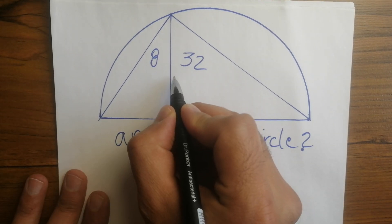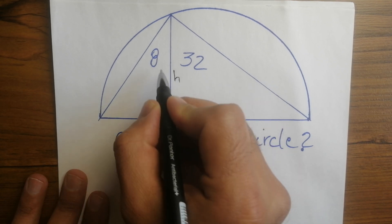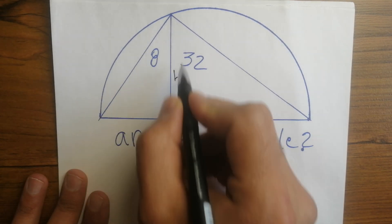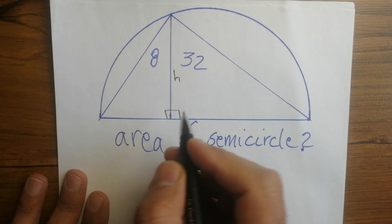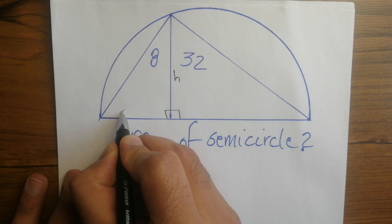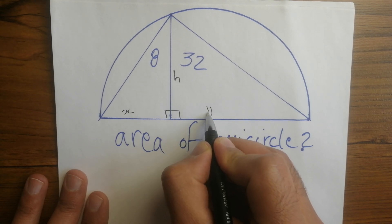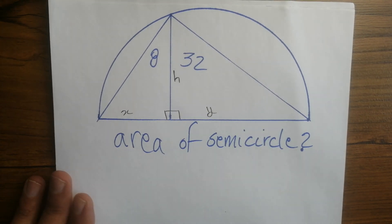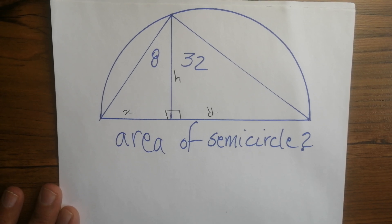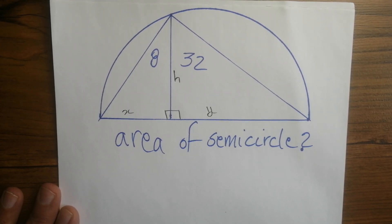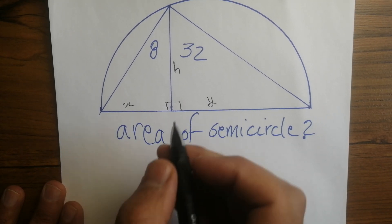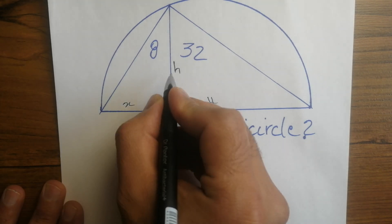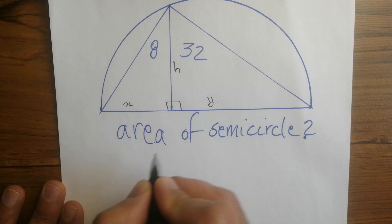Now let's start and make some assumptions first. We assume the height of all these triangles is h. Let's assume the base of the smaller triangle is x, and the base of the bigger triangle is y. The method I chose for today — I think this is the most clear and obvious method — is to find the relationship between h, x, and y.